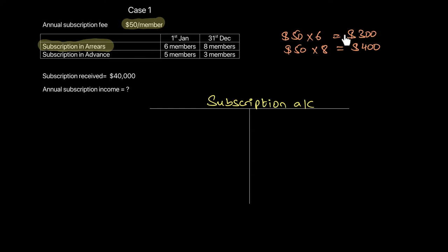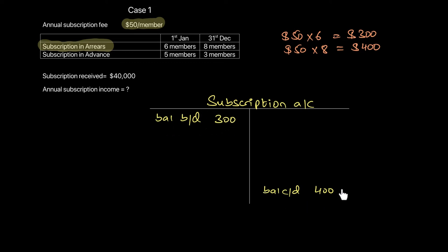$300 becomes your opening asset. Eight members owed subscription at the end of the year — that's 50 times 8 — so $400 is subscription in arrears at the end of the year, which is your closing asset. Entering this in the subscription account: $300 is the opening arrears with a debit balance, and $400 becomes your closing arrears on the credit side.